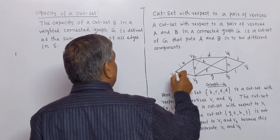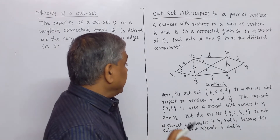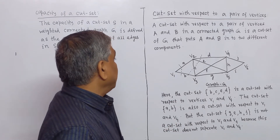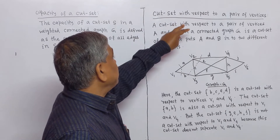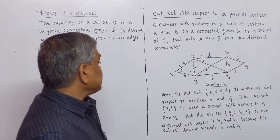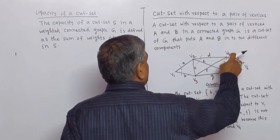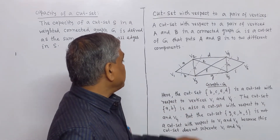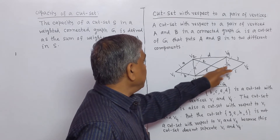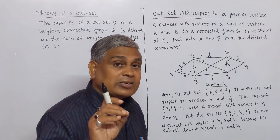Therefore, cut sets {B, C, E, D} and {A, B} are cut sets with respect to the pair of vertices V1 and V4. But the cut set {G, E, H, J} is not a cut set with respect to vertices V1 and V4, because if we remove edges G, E, H, J, vertices V1 and V4 remain in the same component.